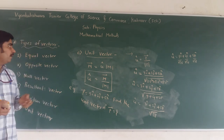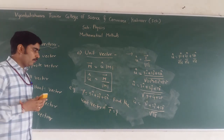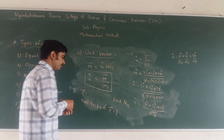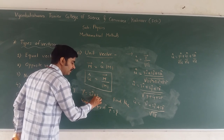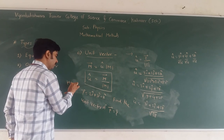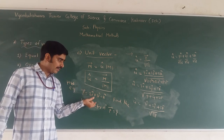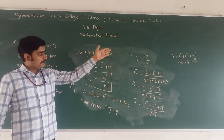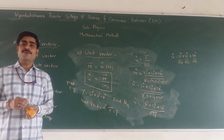I hope today you have understood the types of vectors. Now take one question for homework. Vector P is equal to 2 i-cap plus 3 j-cap minus 3 k-cap. Find the unit vector of P. Try to solve it at home in the same manner. Thank you, have a nice day.